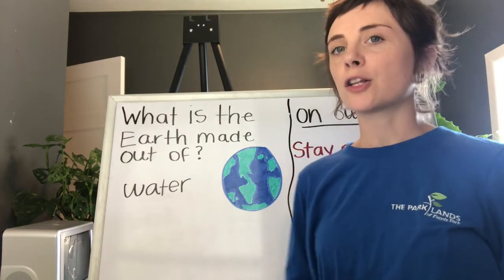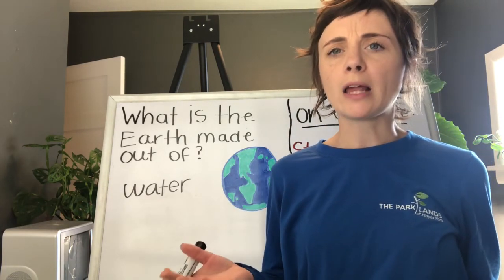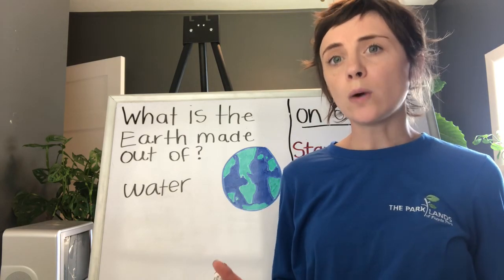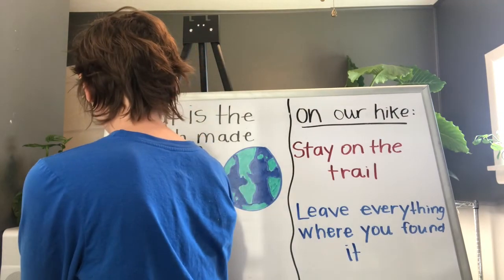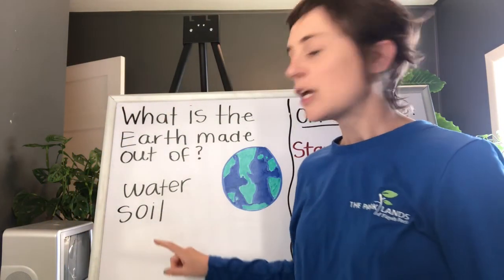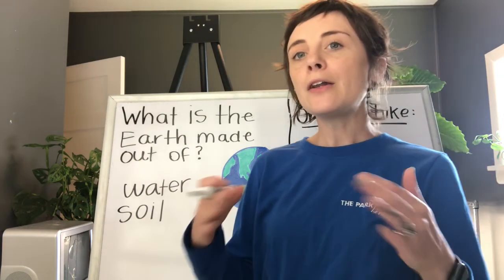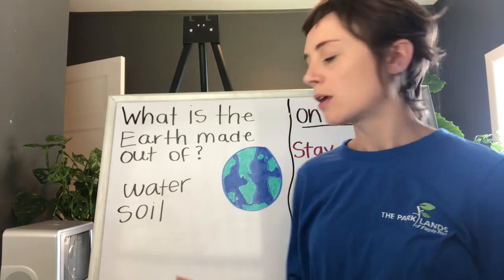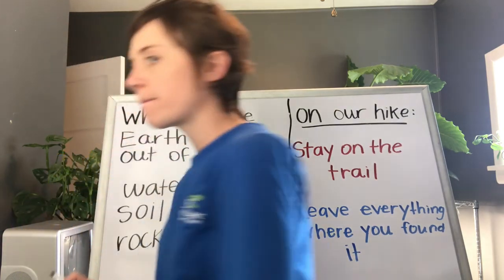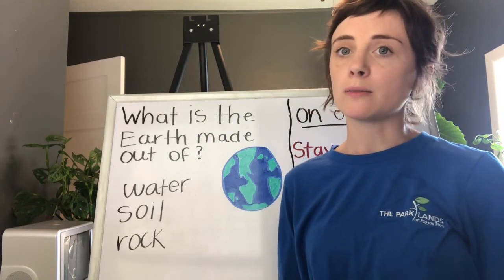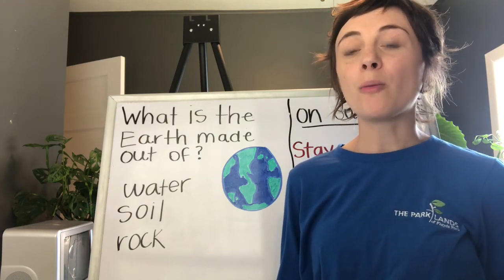We added water. Our second earth material has to do with all of the green. Green usually represents plants, but what are plants living in? Without soil, our plants wouldn't survive, so our second earth material is soil. You might call it dirt, but today we're going to call it soil. Underneath all of the soil we have rock — that's our third earth material. Rock doesn't always live underneath soil; our sidewalks and roads are made of rock, and you might see rocks down at a creek.